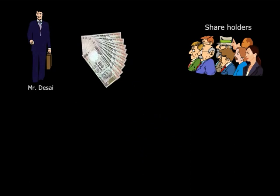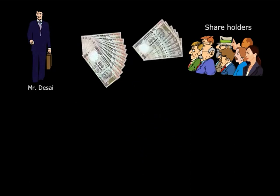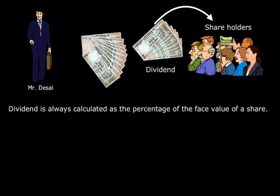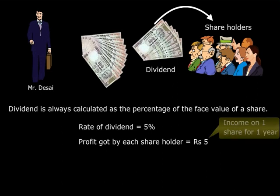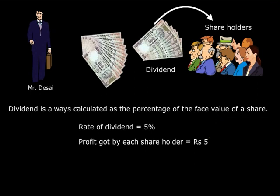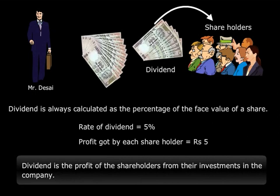Now at the end of the year, when Mr. Desai got a profit, he decided to distribute the profit among the shareholders in proportion of their investments. This profit is known as dividend. Dividend is always calculated as the percentage of the face value of a share. So if he pays the dividend at 5%, then each shareholder will get rupees 5 as the profit — meaning rupees 5 is the income of a shareholder on one share for one year.